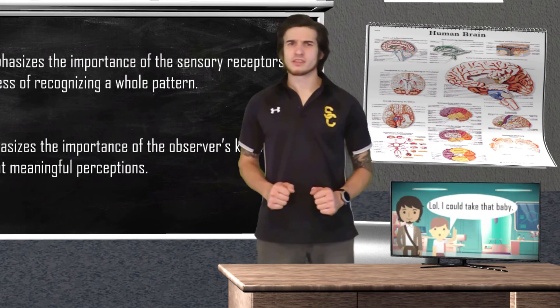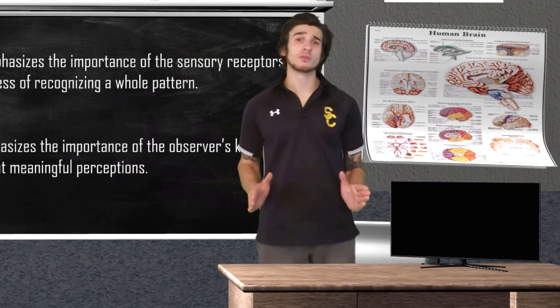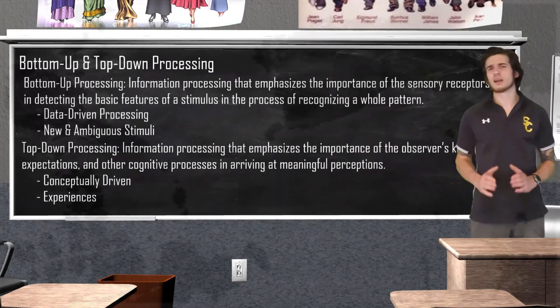While top-down and bottom-up processing are opposite ways of processing information, we do use both in our everyday perception. I am going to use this image to explain this — take a couple seconds to try and figure out exactly what you are looking at. Since this image is rather ambiguous, you will first have to rely on the basic sensory information you pick up — this is you using bottom-up processing. Once this information is in your brain, your brain will try to relate it to past experiences or schemas. When all this information is gathered, you might be able to come to the conclusion that what you are looking at is a cow. If you still can't see it, don't worry, I will point it out for you.